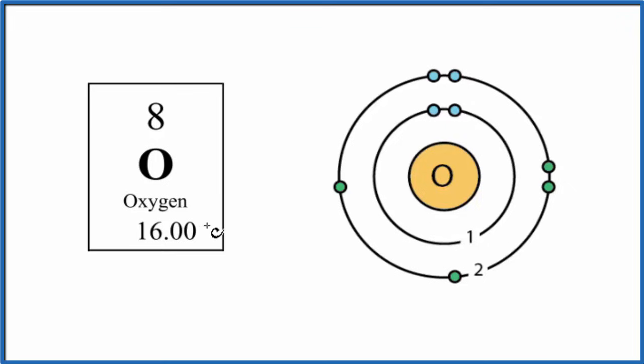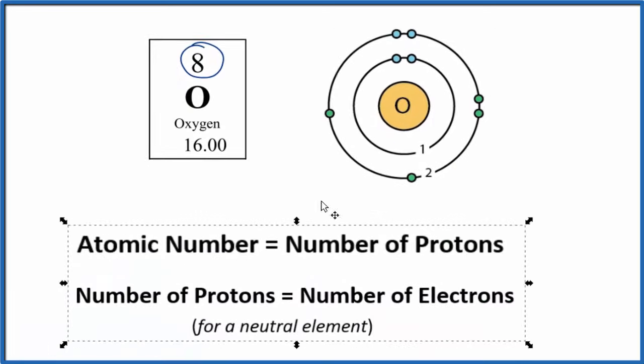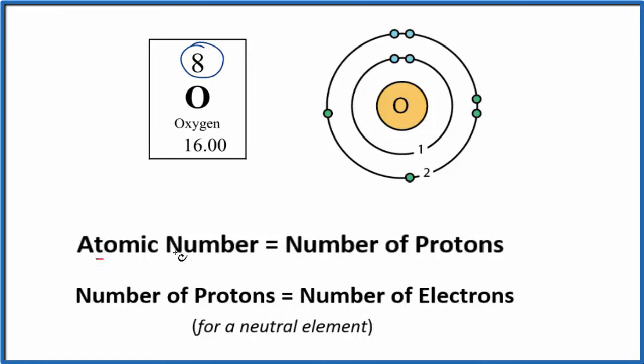So first off, when we look at oxygen on the periodic table, the atomic number, that's 8. And the atomic number equals the number of protons. So oxygen, the atomic number is 8, that means we have 8 protons.